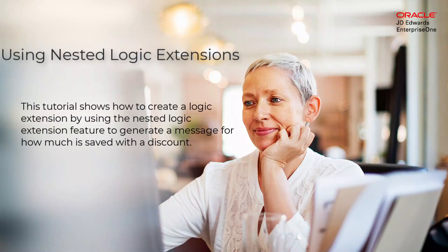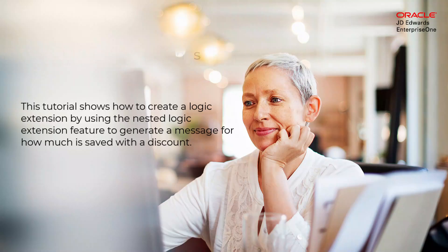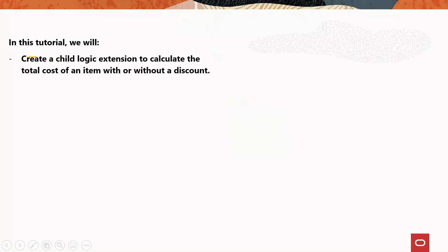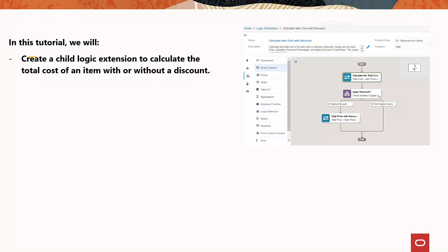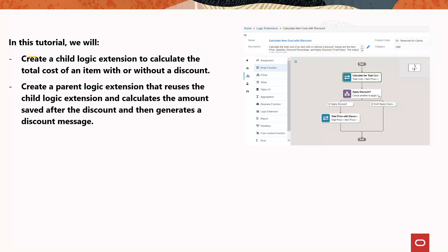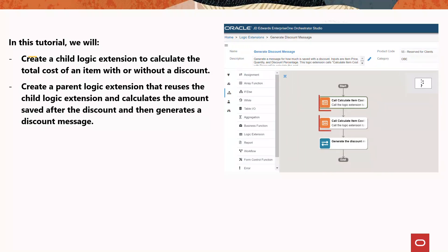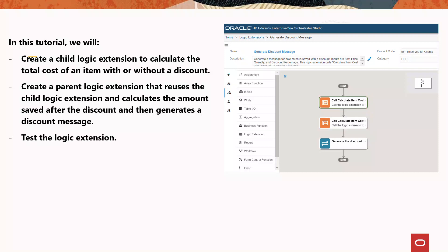This tutorial shows how to create a logic extension by using the nested logic extension feature to generate a message for how much is saved with a discount. We will create a child logic extension to calculate the total cost of an item with or without a discount, create a parent logic extension that reuses the child logic extension and calculates the amount saved after the discount, and then generates a discount message.